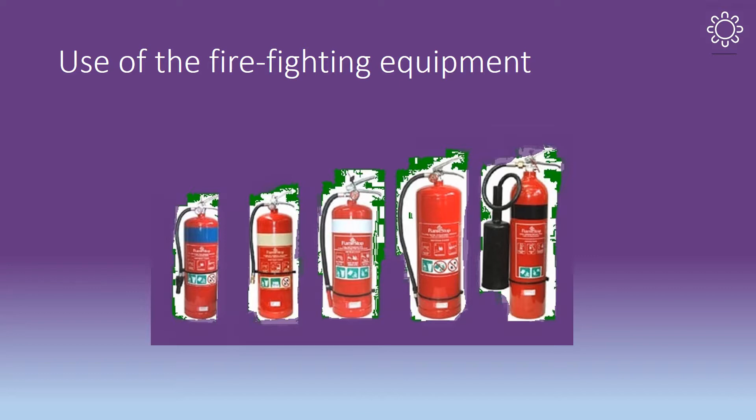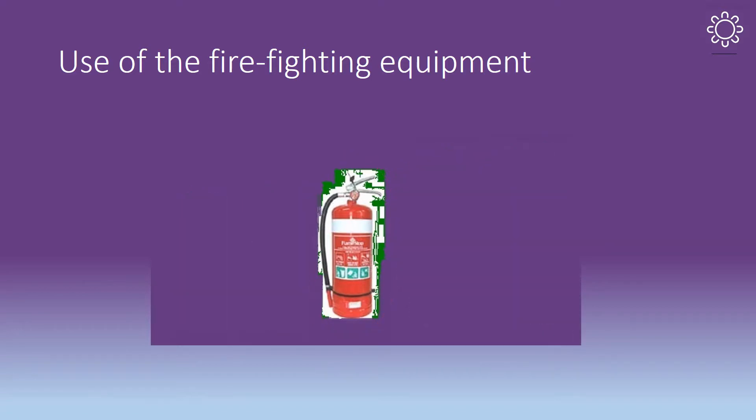All fire extinguishers within St Paul's Uniting Church are dry chemical fire extinguishers. Dry chemical fire extinguishers can be identified by a white band around the centre of the extinguisher. They contain a powdered substance that when discharged can be used on most classes of fire, including equipment that is connected to an electrical source.